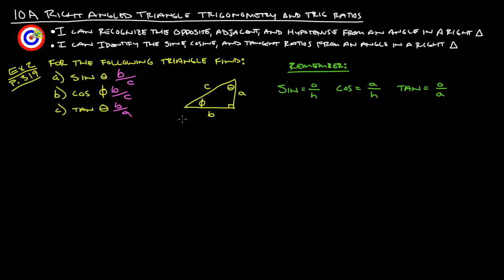That's really all there is for right angle trigonometry and trig ratios. Now you should be able to say that you can recognize opposite, adjacent, and hypotenuse from an angle in a right triangle, and also identify sine, cosine, and tangent ratios from an angle in a right triangle. If you have any questions, feel free to ask. Thanks.